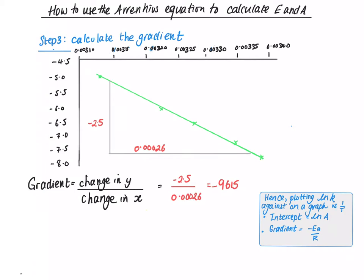Now going back to what we originally thought, plotting ln K on a graph against 1 over T, the intercept is ln A, and the gradient is minus Ea divided by R. So this number here is Ea divided by R. Ea equals minus the gradient times R, so rearranging it.